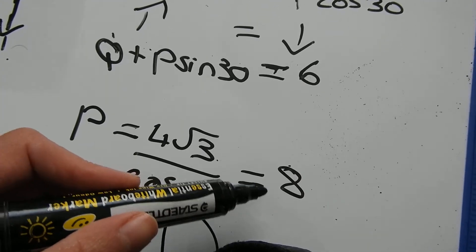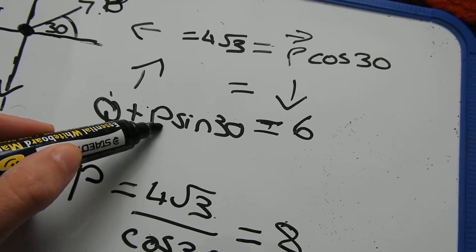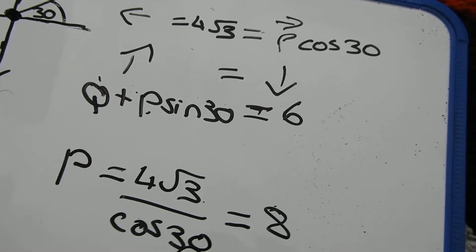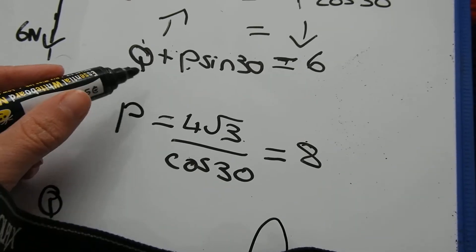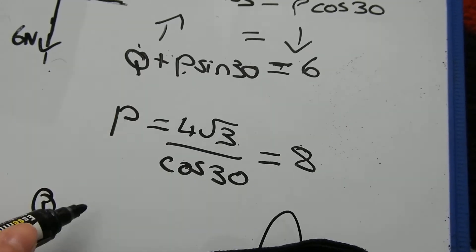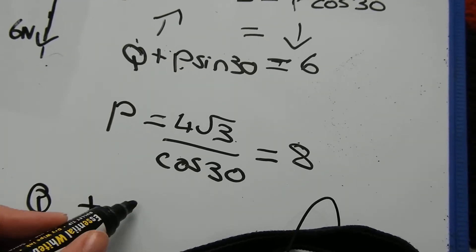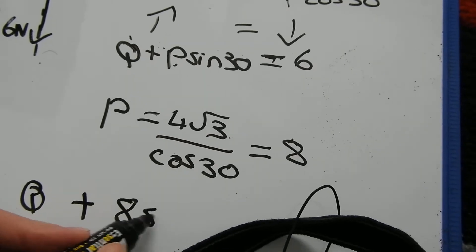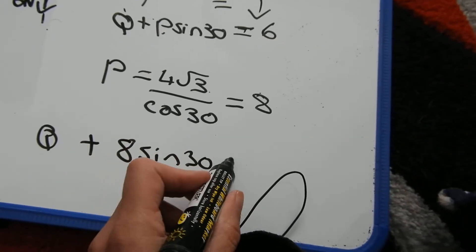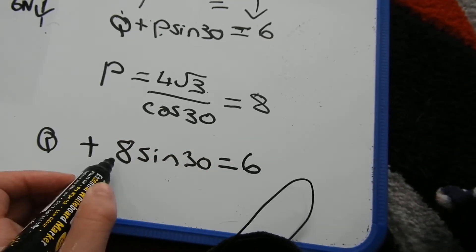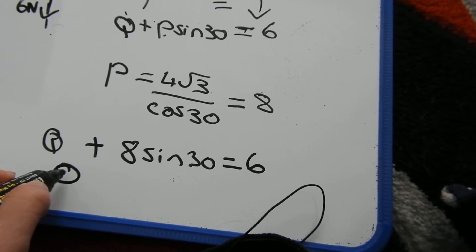Now we can go back and just put P into the bottom equation and rearrange it to find Q. So Q, so I'm taking this one, just putting in my number for P, plus 8 sin 30, plus 8 sin 30 is equal to 6. 8 sin 30, if you type that into your calculator,